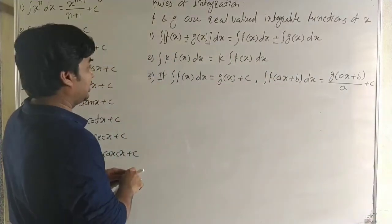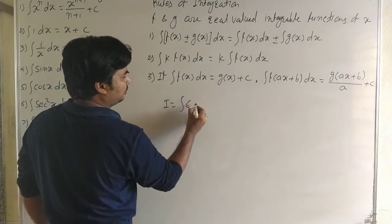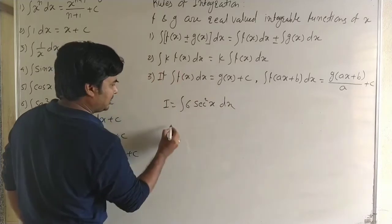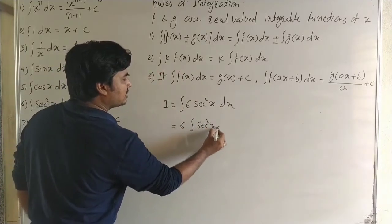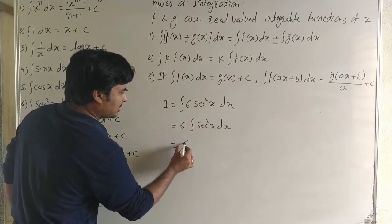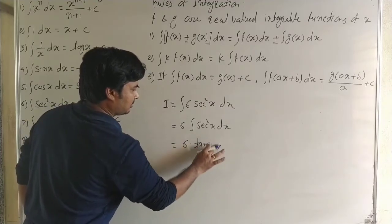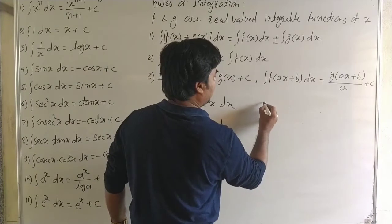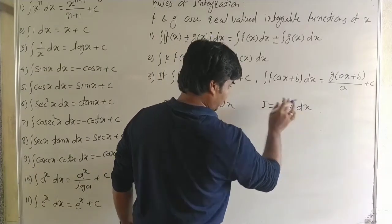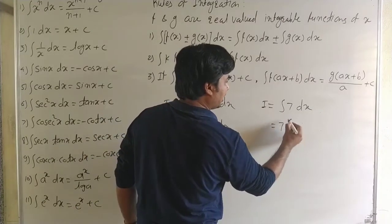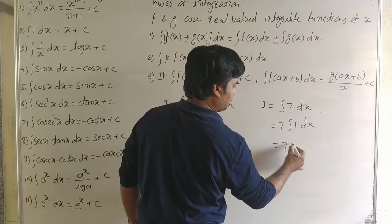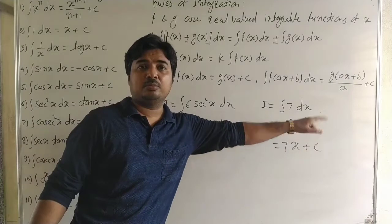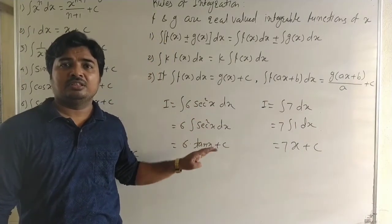For the constant × function rule, consider the integral of 6 sec²x dx. The constant 6 comes out: 6 × integral of sec²x, which is 6 tan x + C. Similarly, integral of 7 dx: 7 is constant, so 7 × integral of 1 dx = 7 × x + C, giving 7x + C.